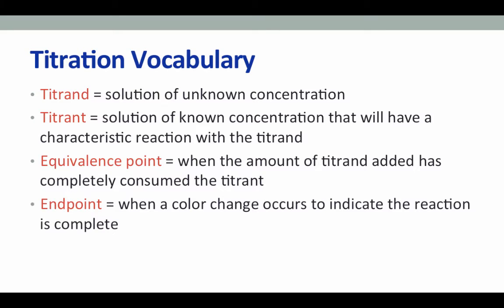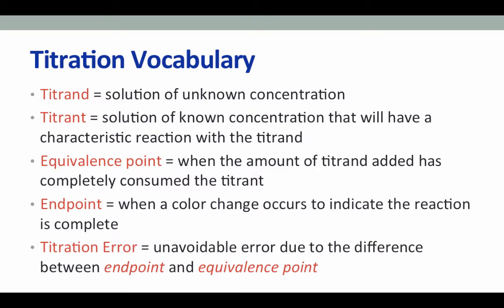The end point is when there is a color change that can indicate that the reaction has reached its equivalence point. At the end point, the titrant is typically a little bit in excess, and that is why we see the color change. Titration error is the measure of the excess of our titrant, so it is the difference between the end point and the equivalence point.